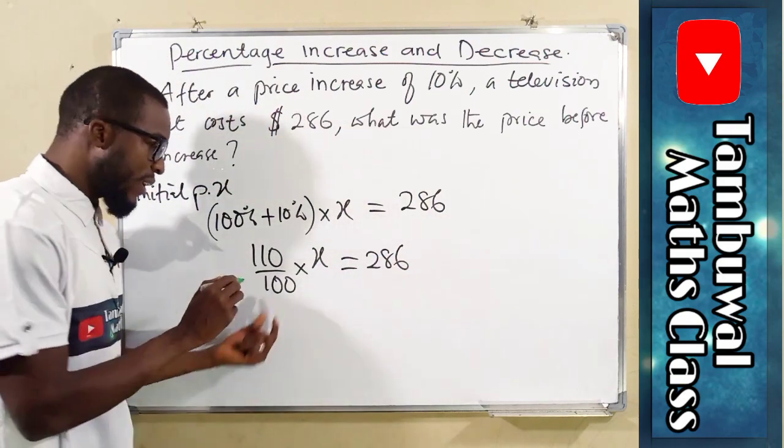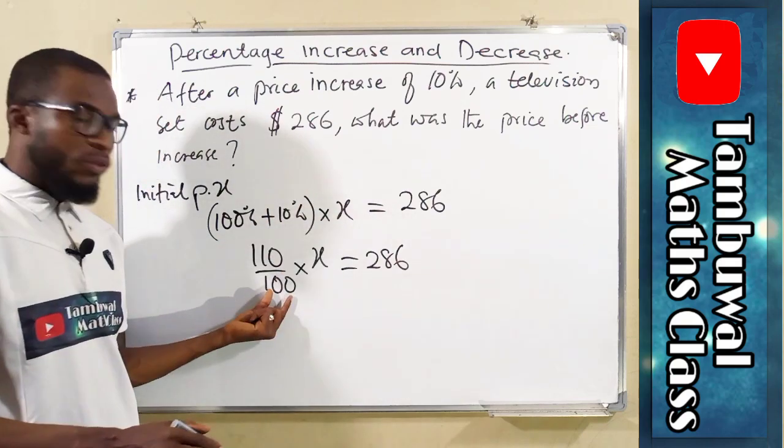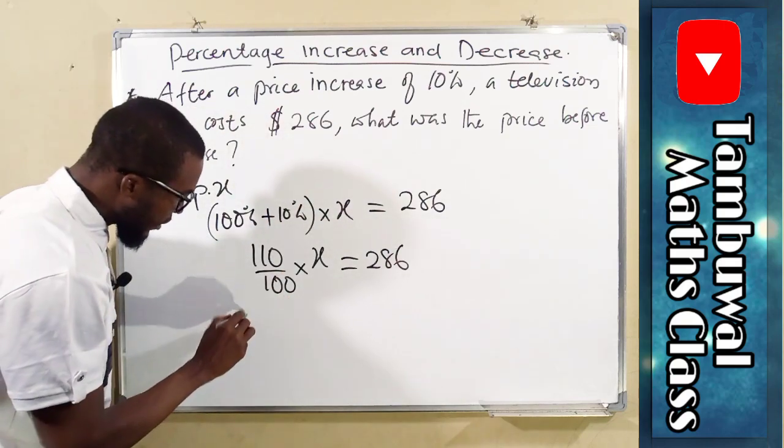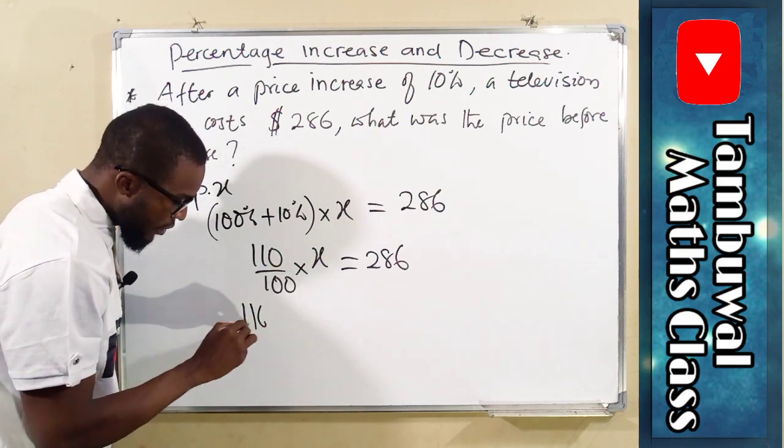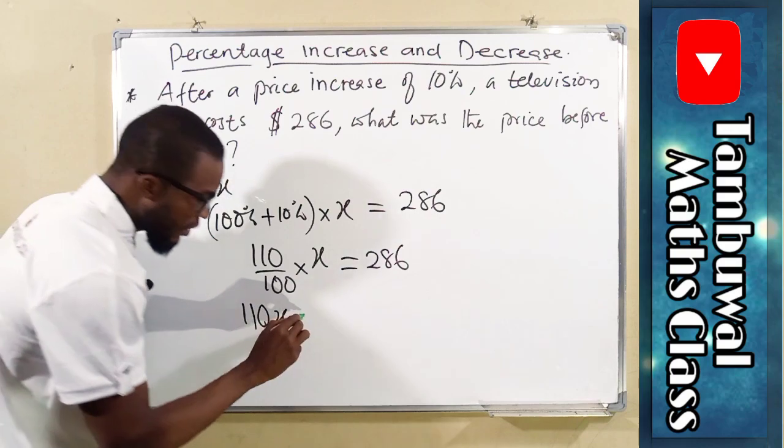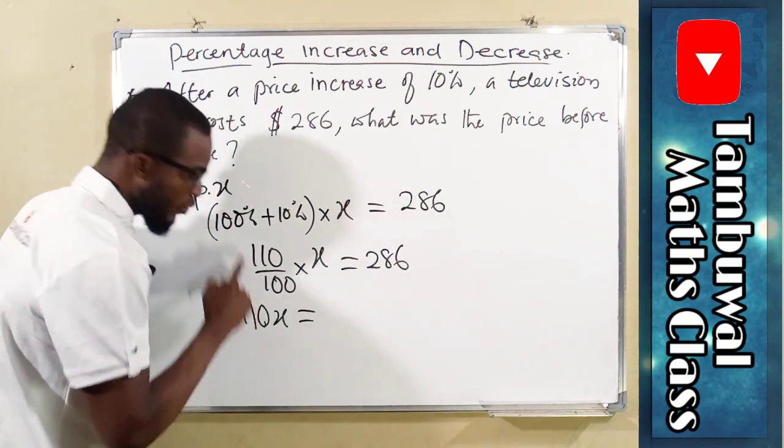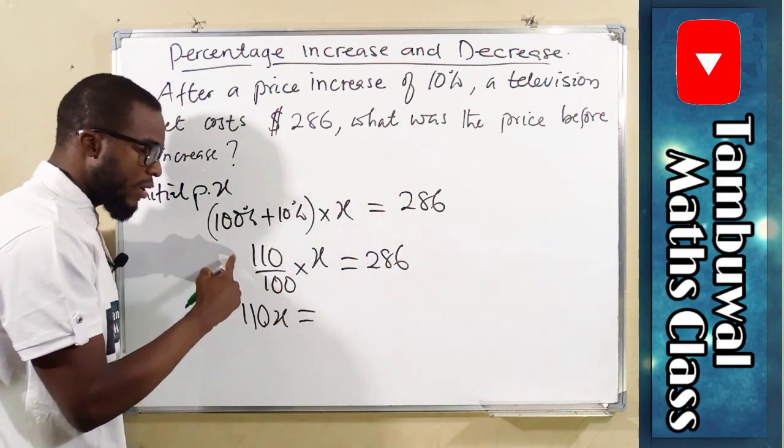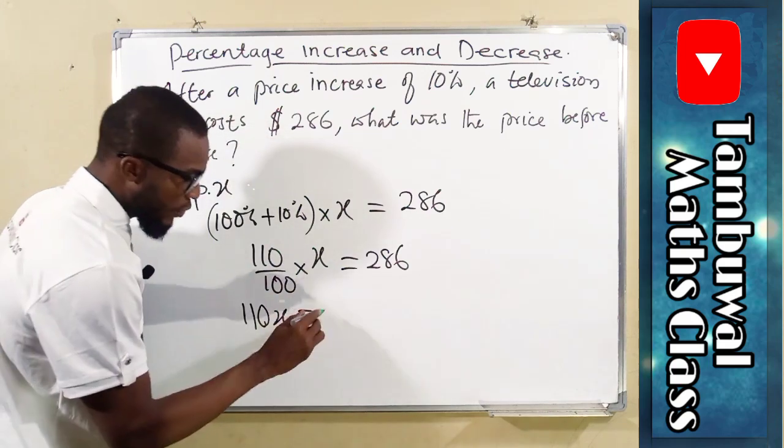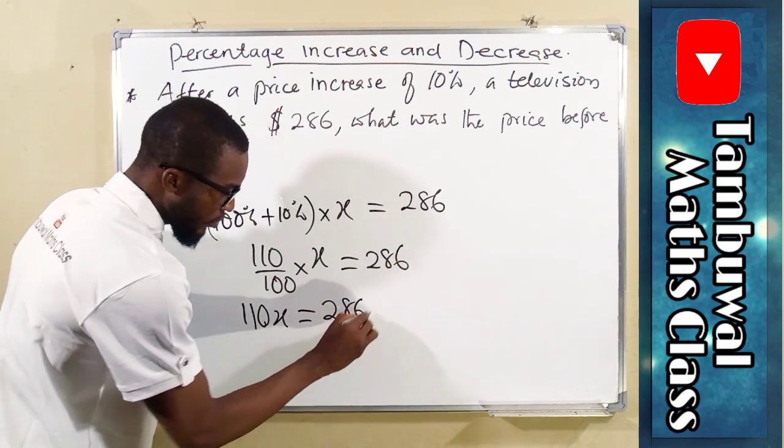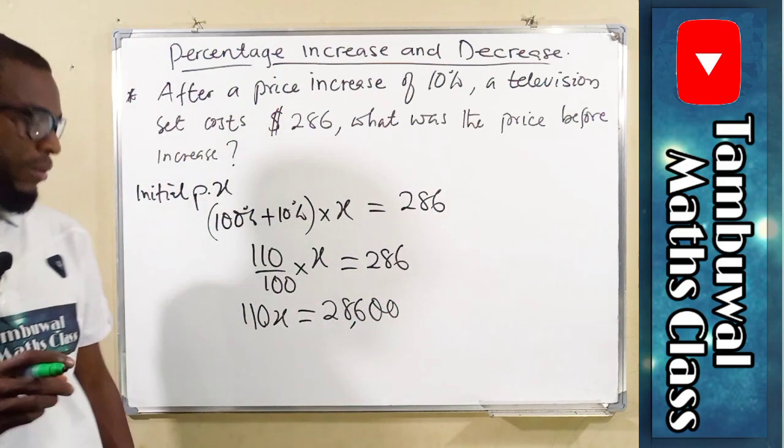To get rid of this fraction, we can multiply both sides by 100. So from the left-hand side, we only have 110X. If you multiply here by 100, it will cancel this. And to the right we have 28600.